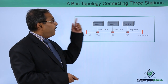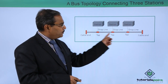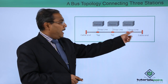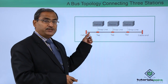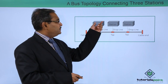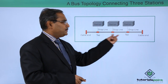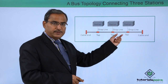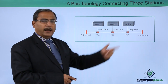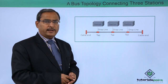This is our bus topology connecting three stations. Here three stations share a single bus. These are the drop lines, and taps are used to establish the connection with this media. There is a cable end on each side, which can also be considered as cable terminators.